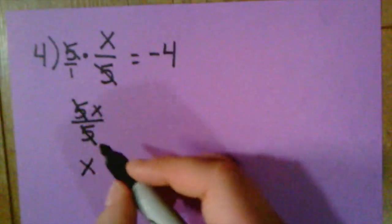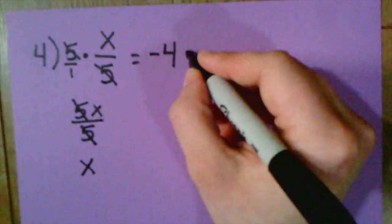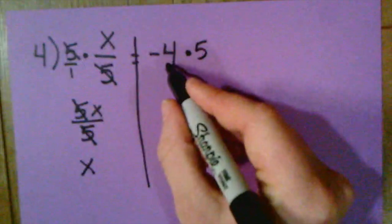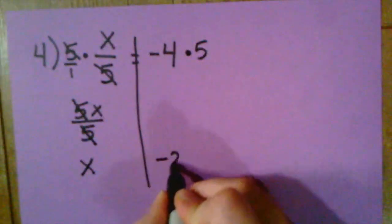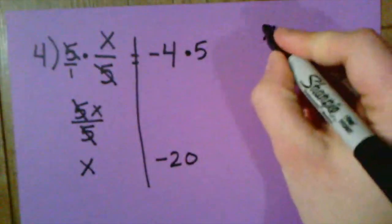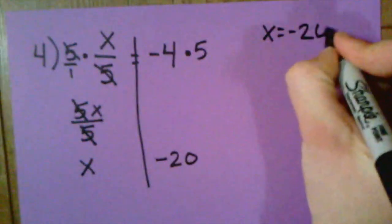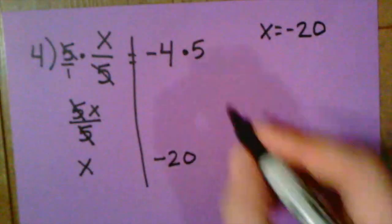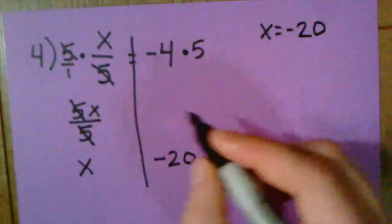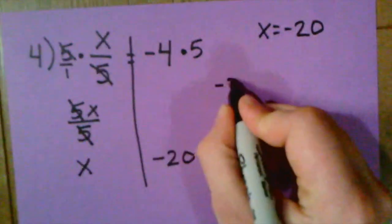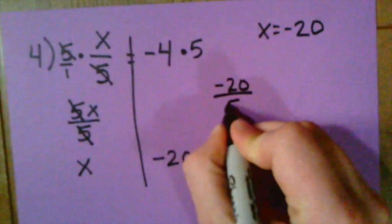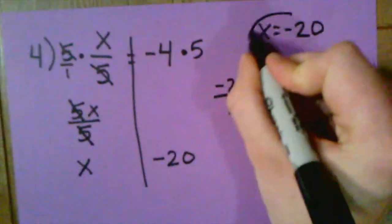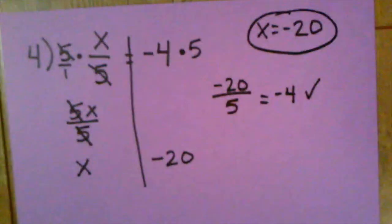And then because I multiplied by 5 on one side, I also have to multiply by 5 on the other side. And so I would end up with negative 4 times 5 equals negative 20. So I have X equals negative 20, but I need to check and make sure that that's correct. So I take negative 20 and I plug it back in for X. So I have negative 20 divided by 5 equals negative 4. And that is true, so I know that X does equal negative 20.